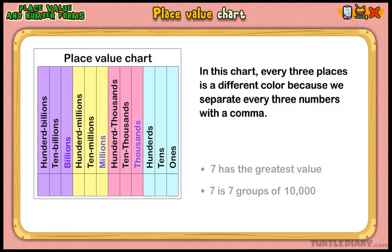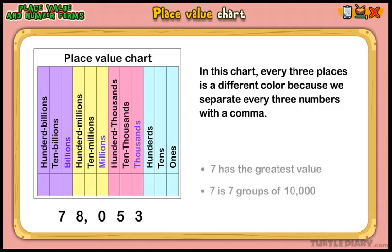We will now learn how to read, write, and expand on numbers through the 10,000s place. Let's review the different place values in this number. Reading the number from left to right, I notice that the 7 is in the 10,000s place.